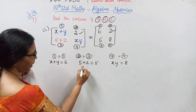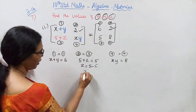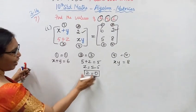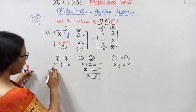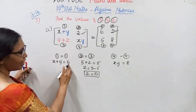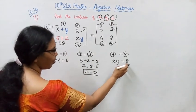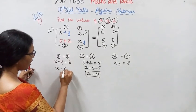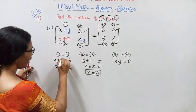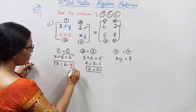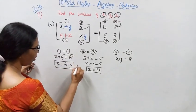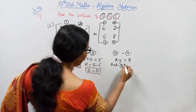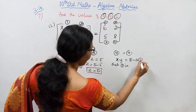From equation three, z equal to 5 minus 5, so z equal to zero. Now using equation one, x plus y equal to 6, and equation four, xy equal to 8. We can express x equal to 6 minus y from the first equation.